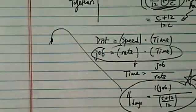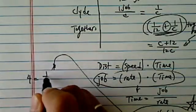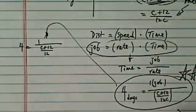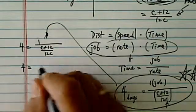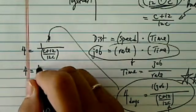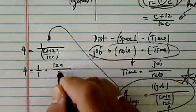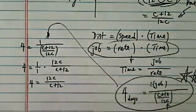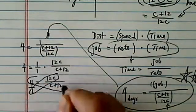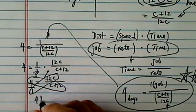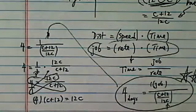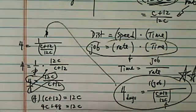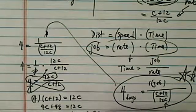So we have 4 is equal to 1 divided by (C plus 12) over 12C. Multiplying by the reciprocal, 4 is equal to 12C over (C plus 12). Cross-multiplying — it looks like a butterfly almost — so 4 times (C plus 12) equals 12C. Expanding: 4C plus 48 equals 12C. Moving terms over: 48 equals 8C. So C is equal to 6 days.